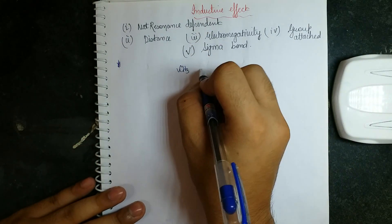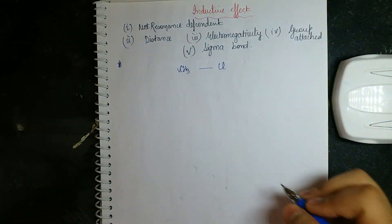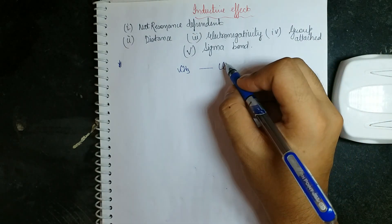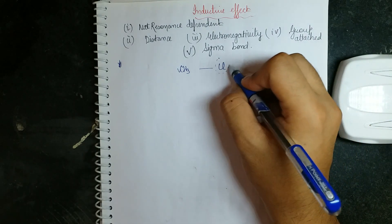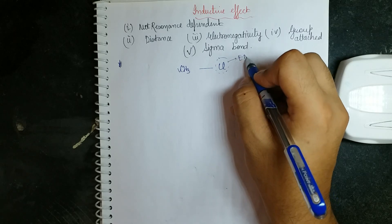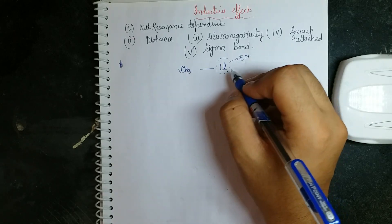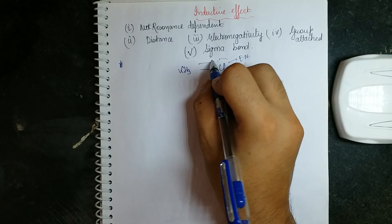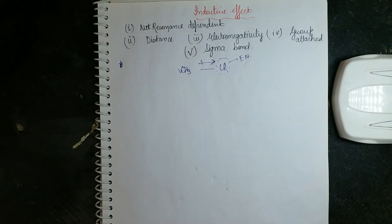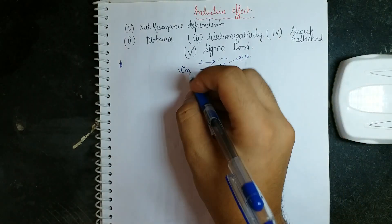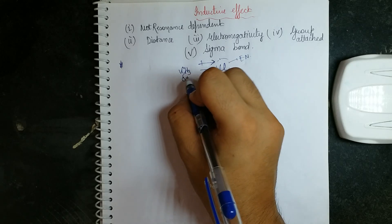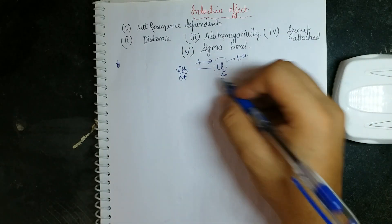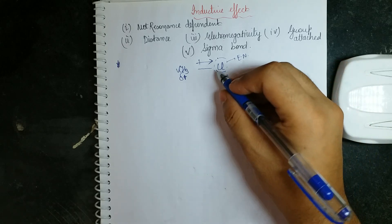Take the compound CH₃Cl. First, we look at electronegativity. Chlorine is more electronegative than carbon, so the electronegative atom tends to attract electron density towards itself. As a result, carbon gets a delta positive charge.